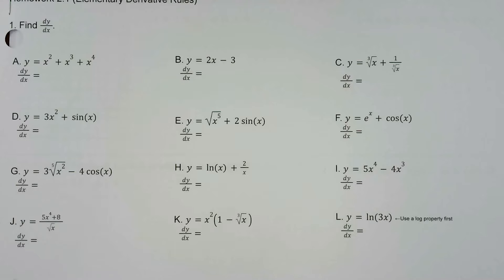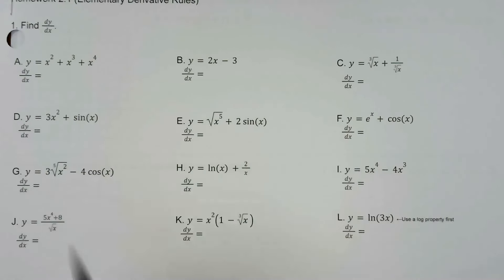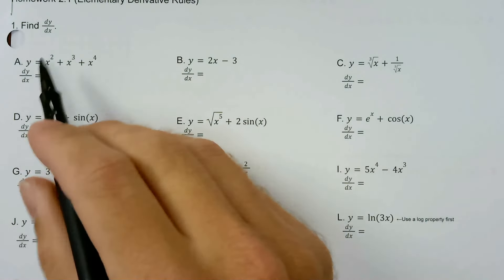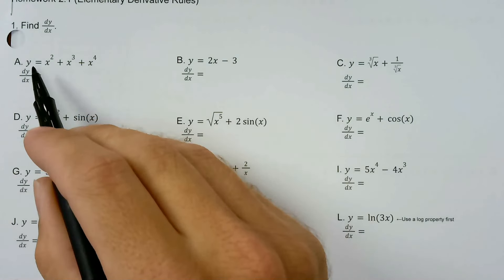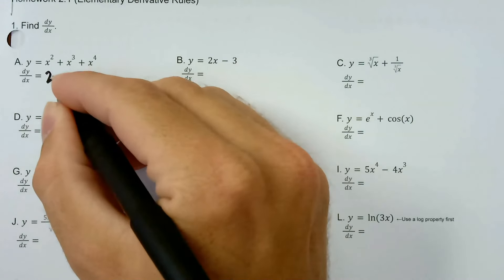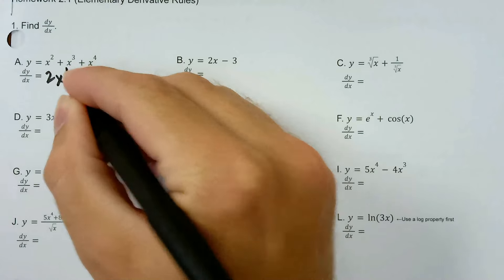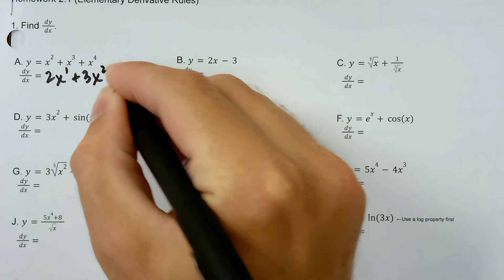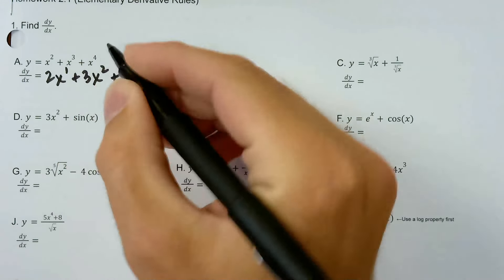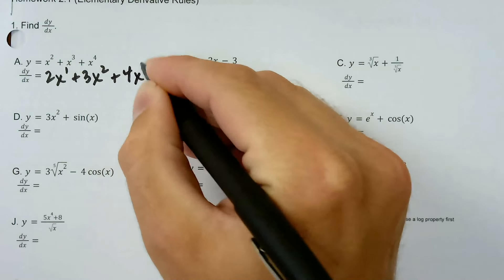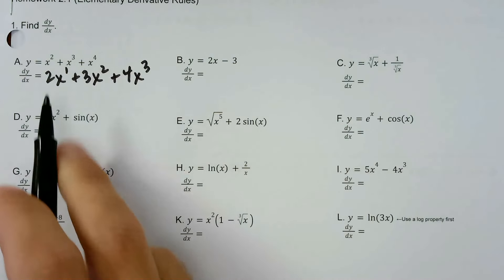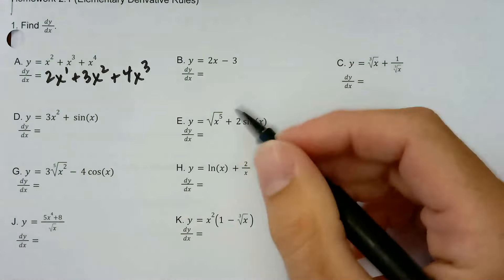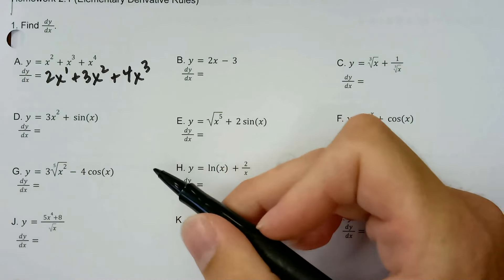Starting with this one — find dy/dx, that just means take the derivative. We've got y here, dy/dx is going to be the derivative; we're going to apply the derivative power rule. We swing the power around the front, and then we subtract 1 from the power. Plus 3x to the 2 plus 4 — subtract 1 from the power. You could call that 2x plus 3x squared plus 4x cubed if you wanted to, but I don't think that's all that much more simple.